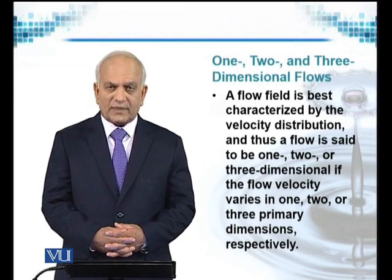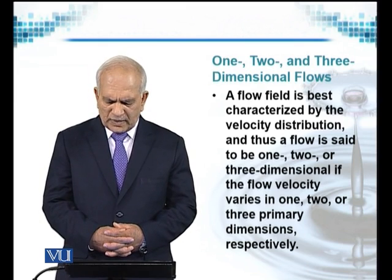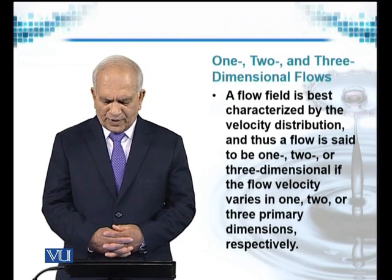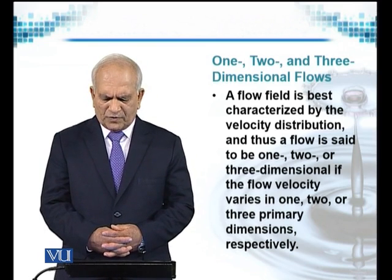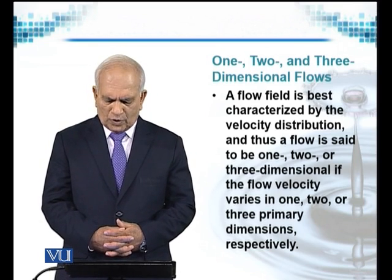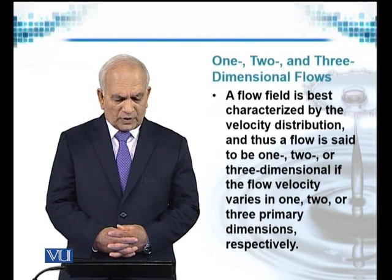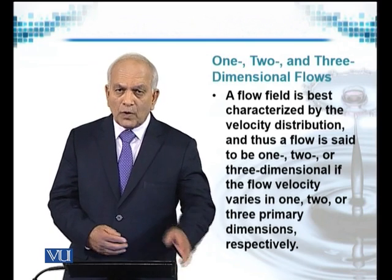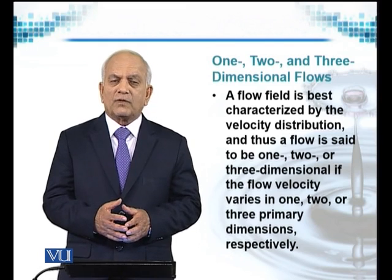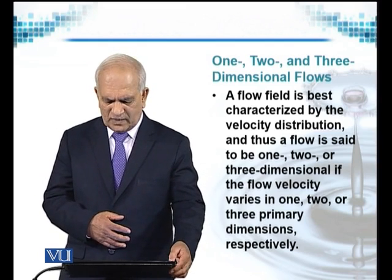A flow field is best characterized by velocity distribution and thus a flow is said to be one, two or three dimensional if the flow velocity varies in one, two or three primary directions or dimensions.